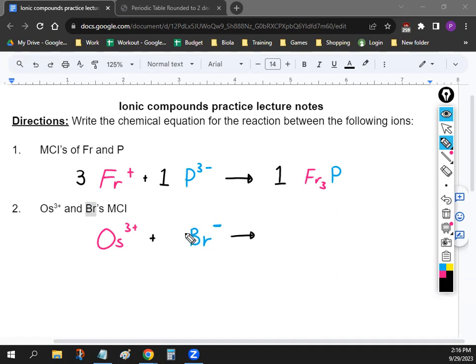So to balance this out, hopefully you can see it's kind of the opposite of the one that we just did. You're going to need three Brs to balance out one Os. And so if you put them together, since you only need one of the Os's, you can put Os by itself and then Br three.